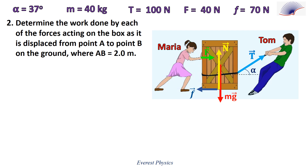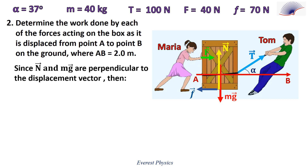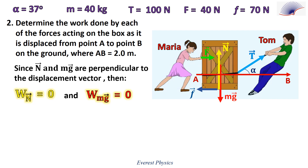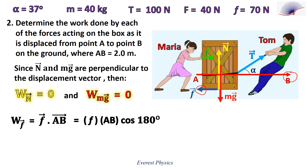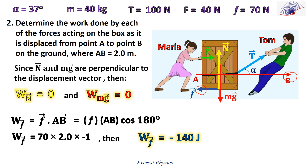Number two: determine the work done by each force as the box is displaced from point A to point B, where AB equals two meters. The normal reaction N and the weight mg are perpendicular to the displacement vector AB, so the work done by N equals zero and the work done by the weight also equals zero. The work done by friction is given by F dot AB. Since friction is opposite to displacement, the angle between them is 180 degrees, giving a work done by friction equal to minus 140 joules.